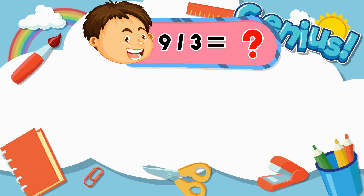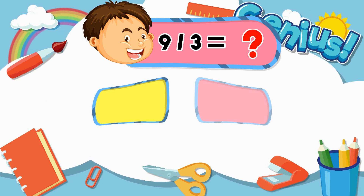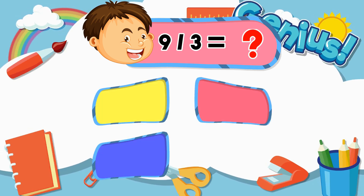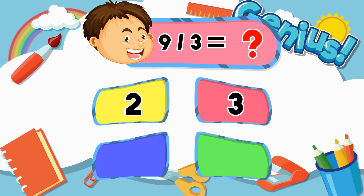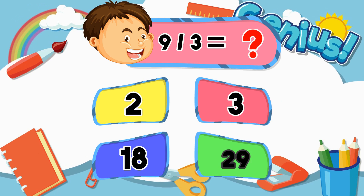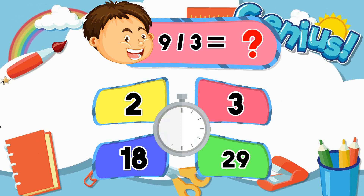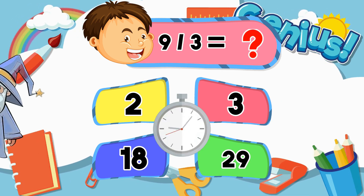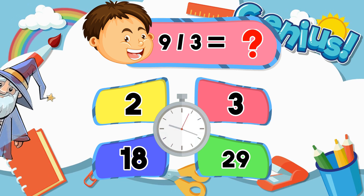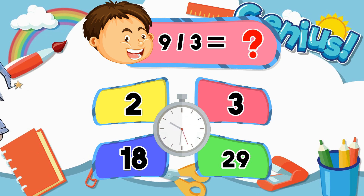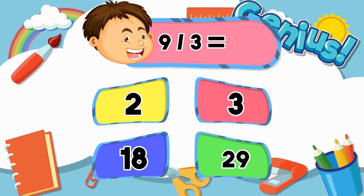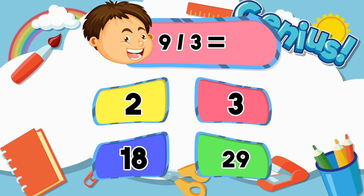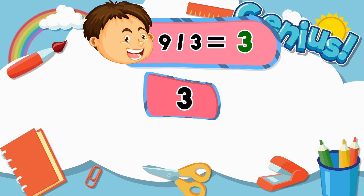What is 9 divided by 3? 2, 3, 18, 29. [Answer:] 3.